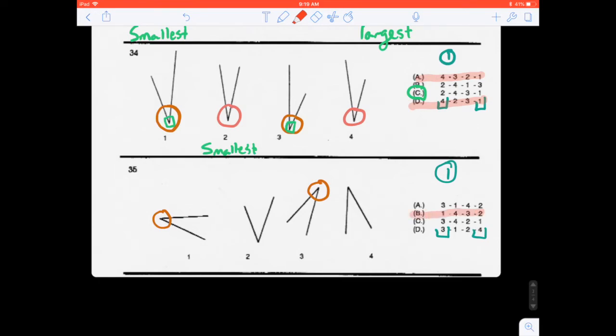So we can go ahead and eliminate B. B is gone. Now we're left with A, C, and D, which doesn't help in the largest angle perspective very much. But we will figure this out. So we're between one, two, and four as being our largest angle.